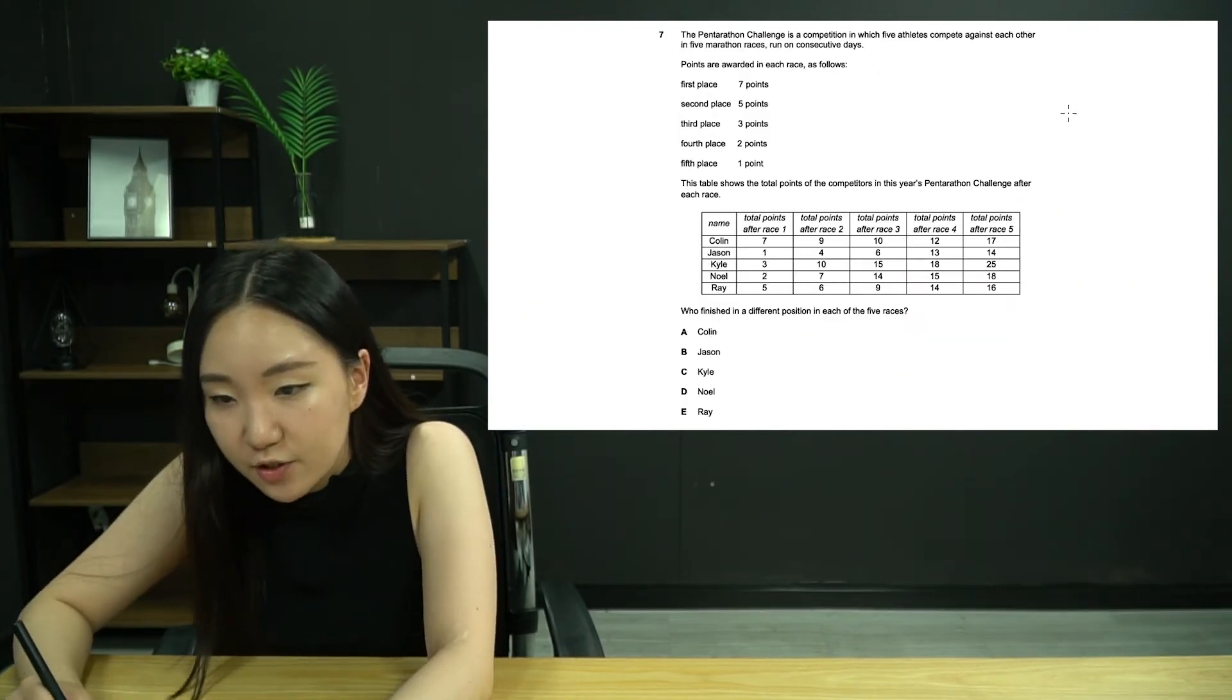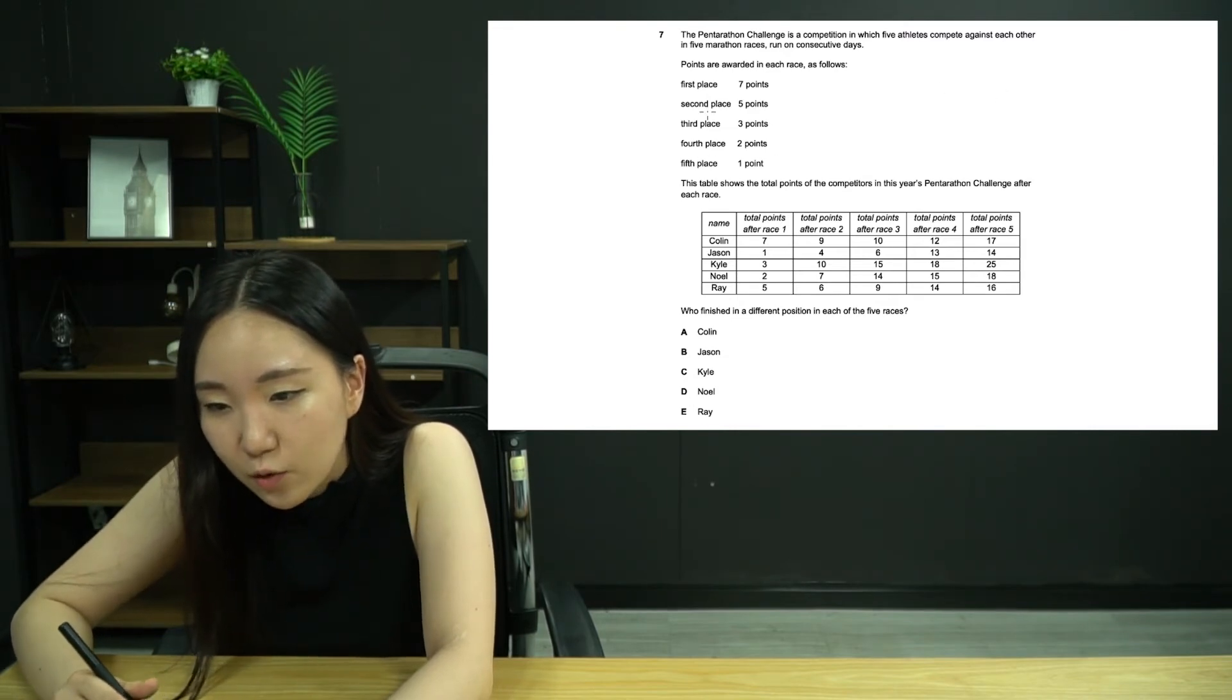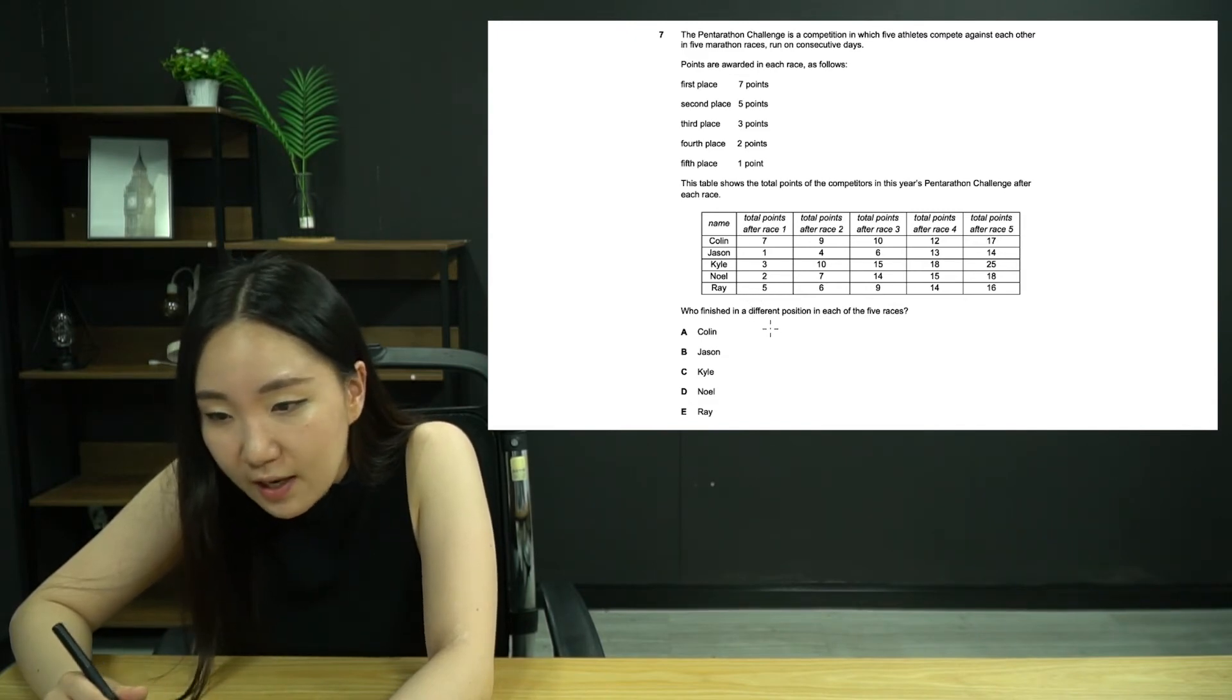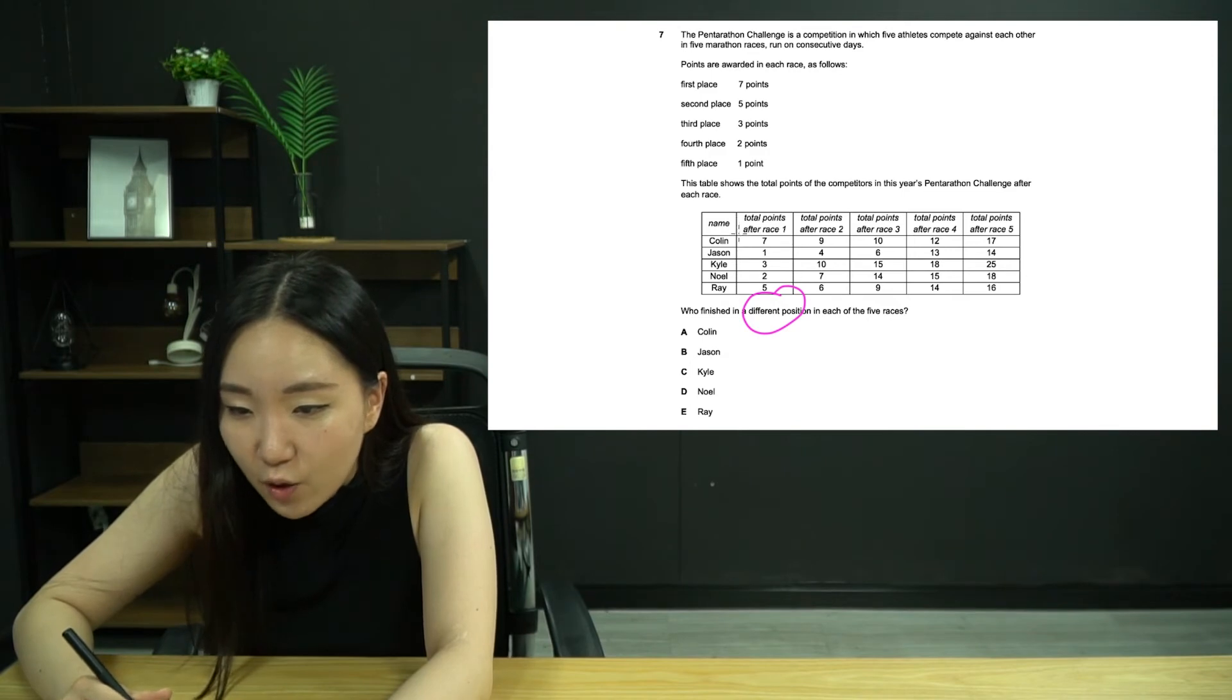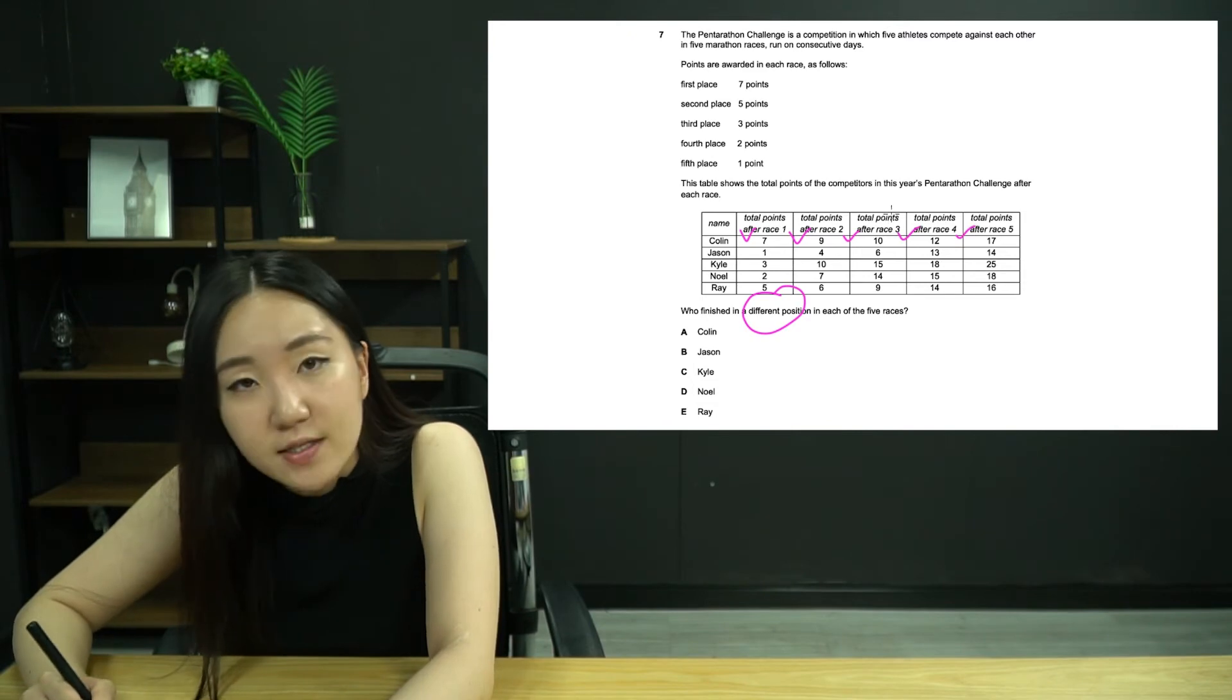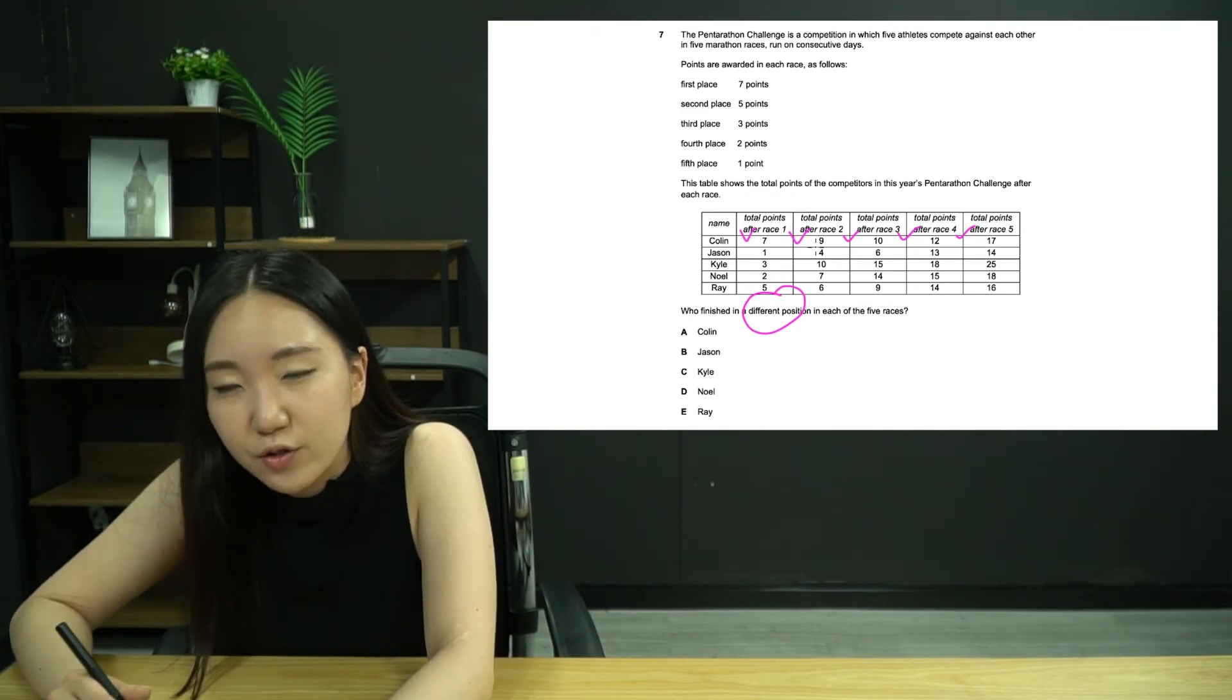The pentathlon challenge is a competition in which five athletes compete against each other in five marathon races run on consecutive days. Here are the points: seven, five, three, two, one, according to what place you come. Obviously there's only five races, so you're going to get at least one point if you come last. Now we want to see who finished a different position in each of the five races. Super easy. What you need to see is the difference.